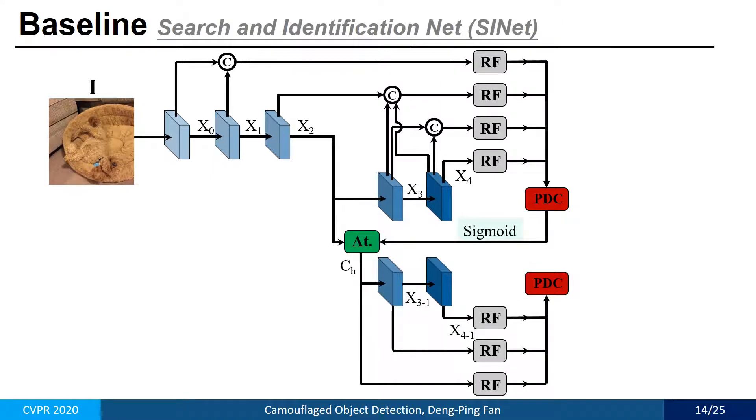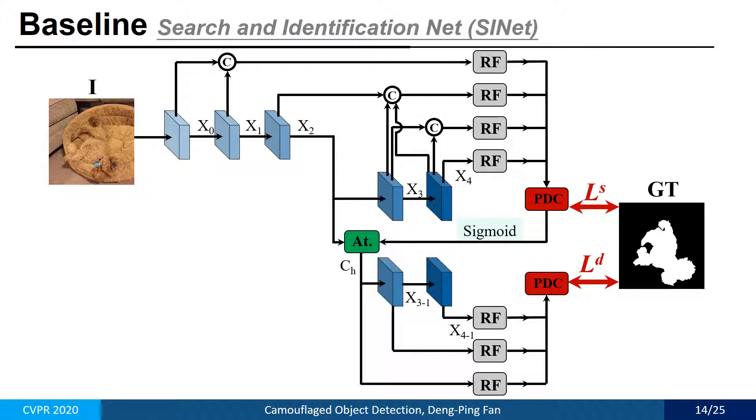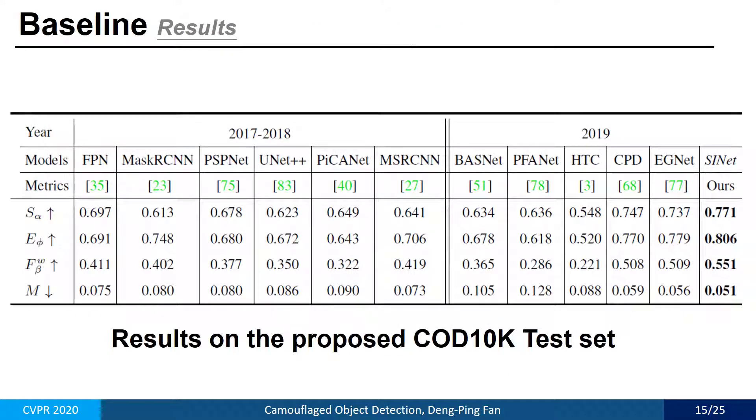We utilize the standard cross-entropy loss to train our SINET. We evaluate various baselines and our SINET on our challenge COD dataset. Our SINET achieves state-of-the-art performance across all evaluation metrics.